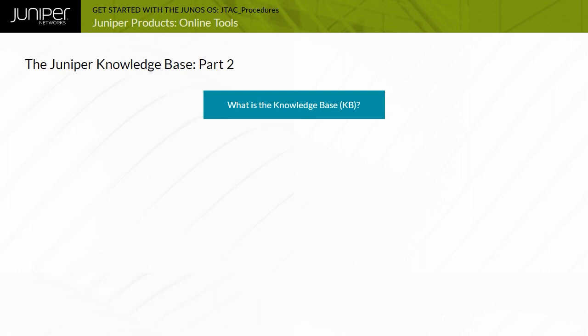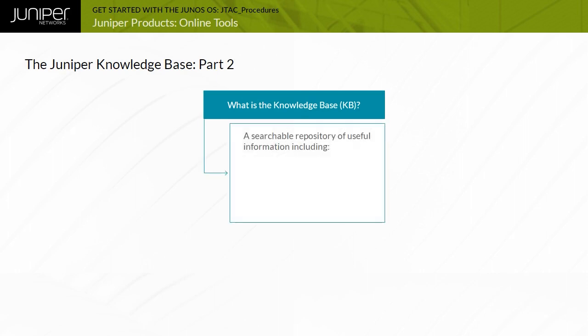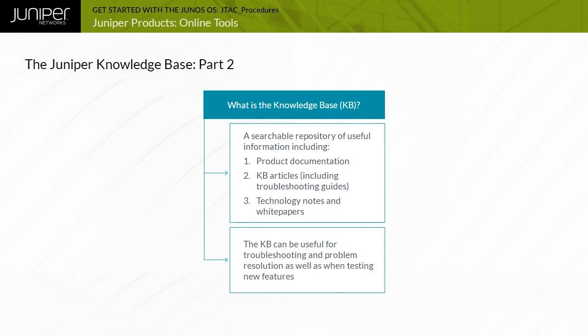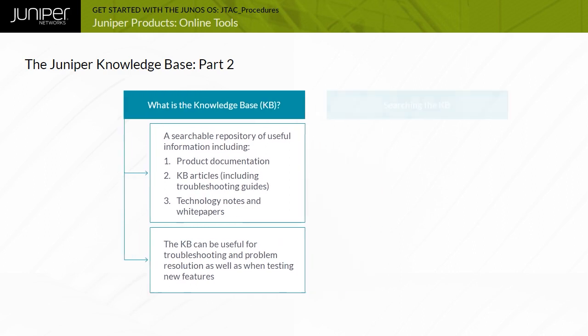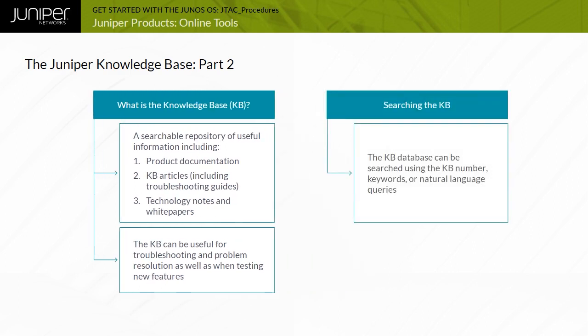What is the Knowledge Base or KB? The content of the KB includes not only the Juniper documentation, but also custom-made articles such as configuration and troubleshooting guides, as well as technology white papers. It is a very useful tool when troubleshooting a problem or when trying out new complex features. The white papers and technology notes usually include full scenarios with step-by-step configuration guides. You can search the KB using the KB number, keywords, or natural language queries.